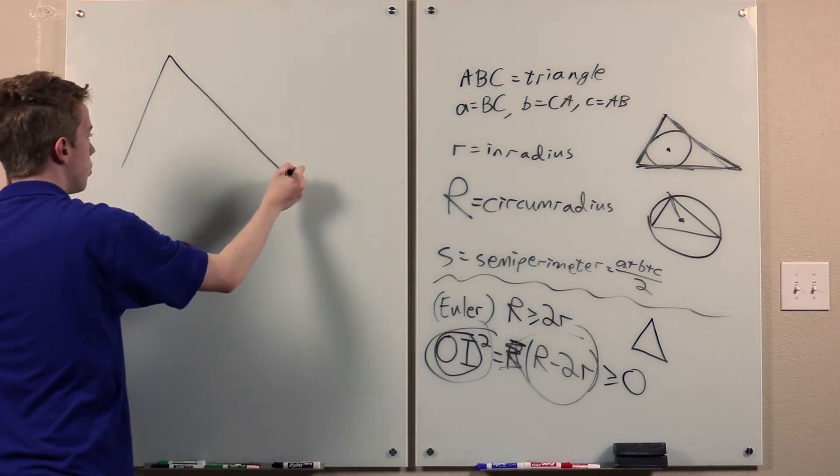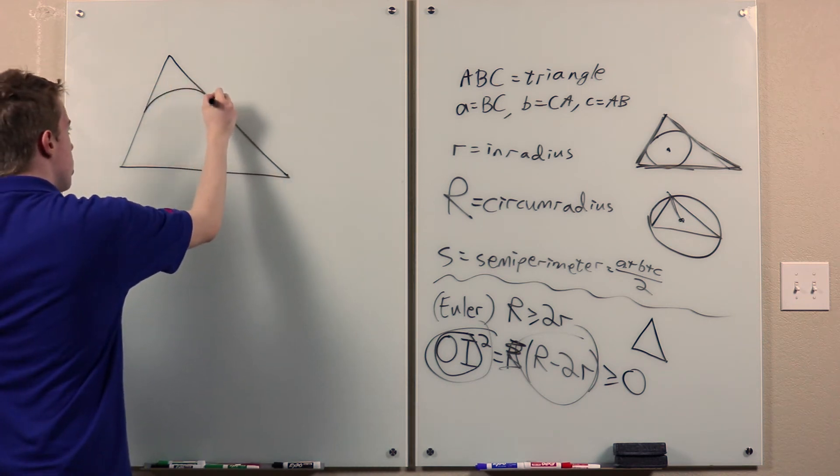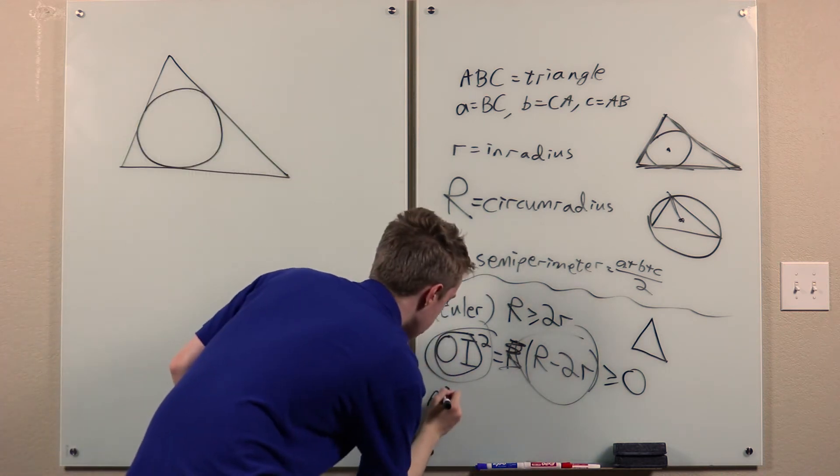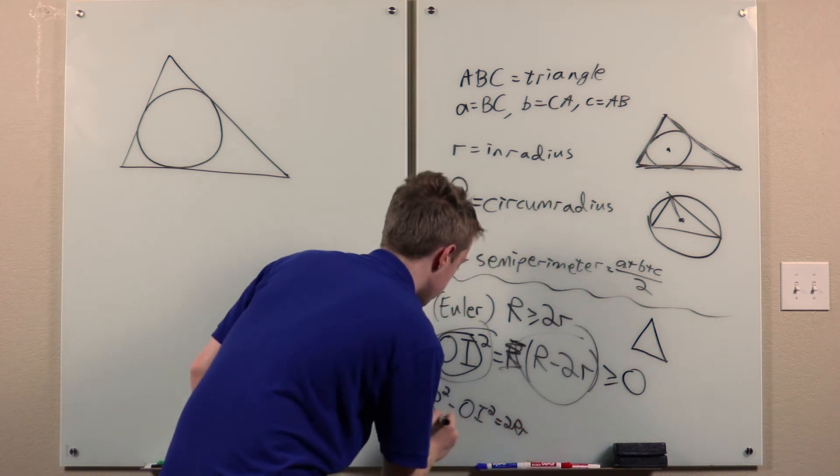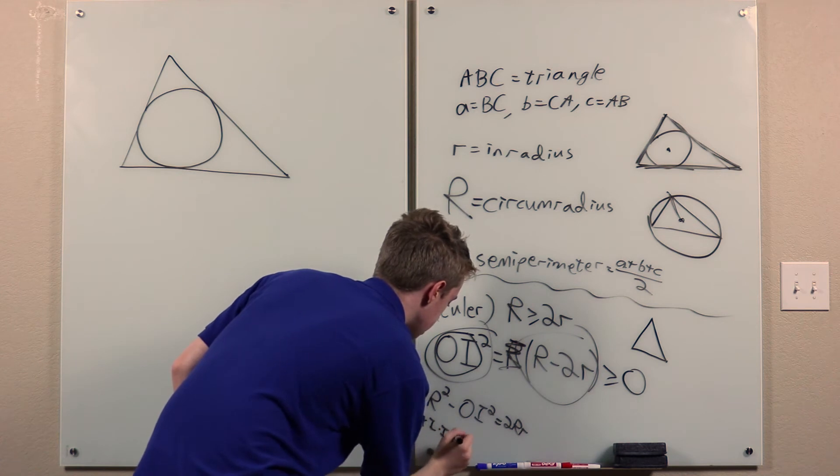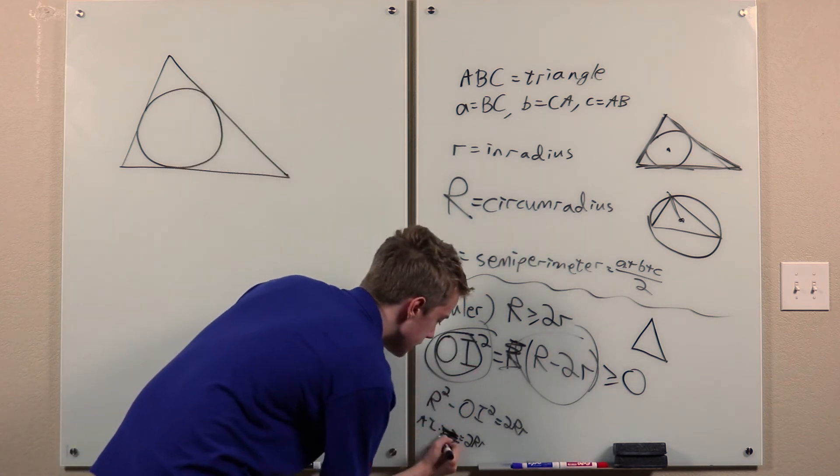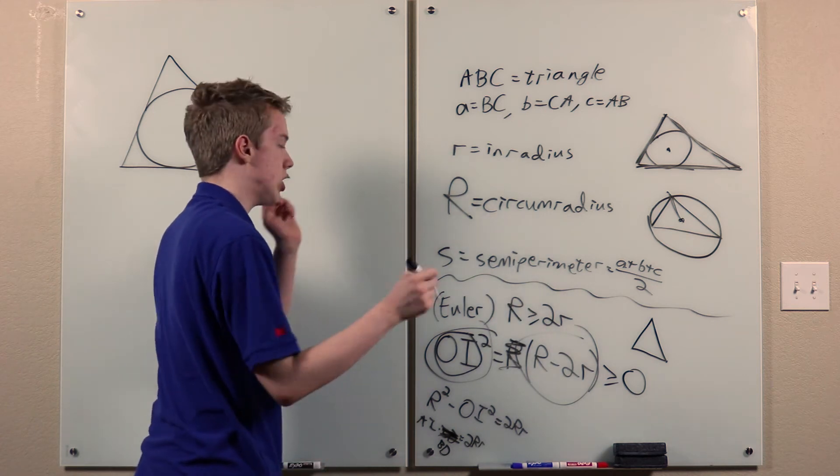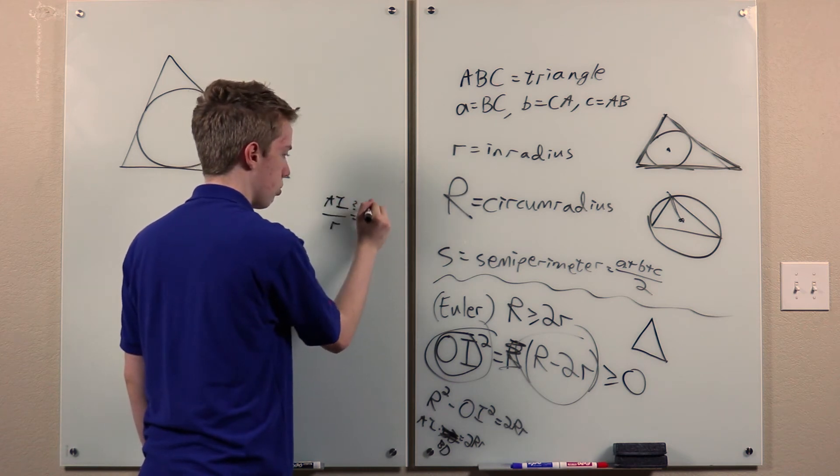So, here's an interesting proof I came up with. And there are many other ways to prove it. There's a more standard proof where we notice that this is equivalent to this. And then we prove that AI times ID is 2Rr because of power of a point, where D is the arc midpoint. By the so-called fact 5, this is BD, where D is the midpoint of minor arc BC of the circumcircle.